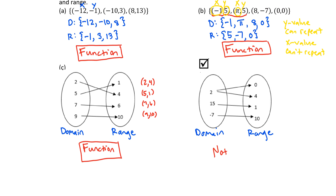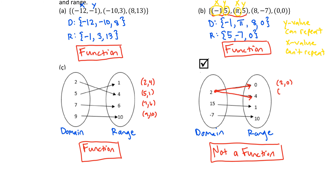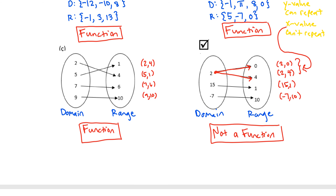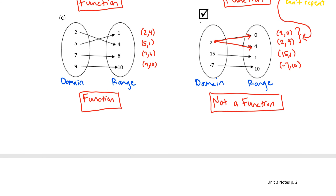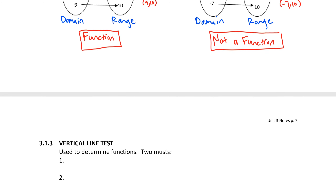You should have said no, this is not a function. The reason is because x equals 2 pairs to two different y values. Remember, every x has to have one unique y. If we list this as ordered pairs, we'd have (2, 0), (2, 4), (15, 1), and (negative 7, 10). The x value 2 repeats — it has two different y values — therefore it is not a function. In the next video, we will look at another way to determine if something is a function: the vertical line test.